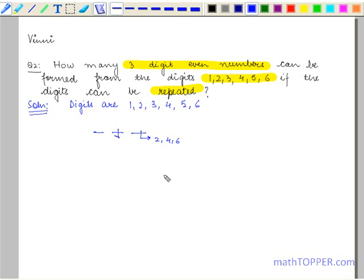For the second place, we can have any of the 6 elements because repetition of the digits is allowed. Similarly, for the first place, we can have any of the 6 digits since repetition is allowed. Hence,